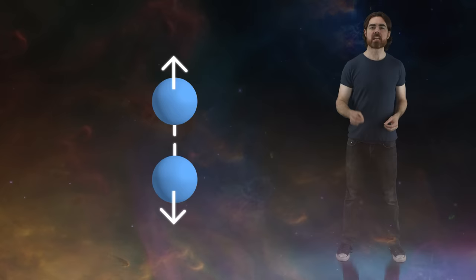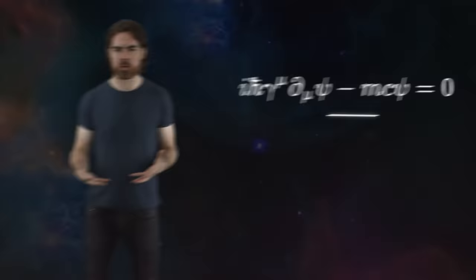That simplification required Dirac to expand the internal workings of the electron even further. Instead of having a two-component spinor up and down, as in Pauli's theory, he needed four components. Now, he had no idea what those two additional mysterious components might mean. But the resulting equation was so simple and elegant that somehow Dirac knew that he was onto something.